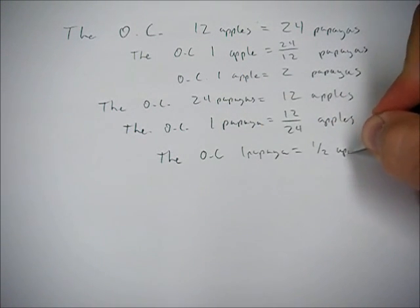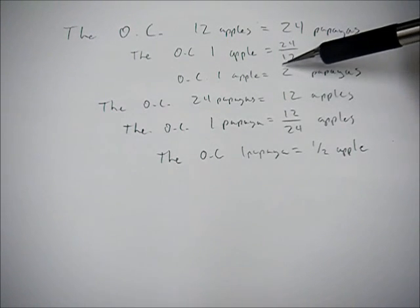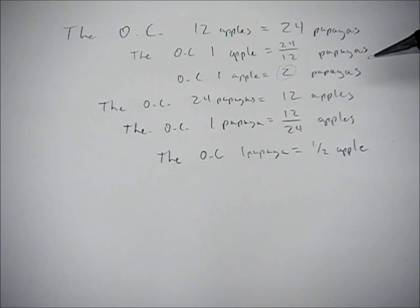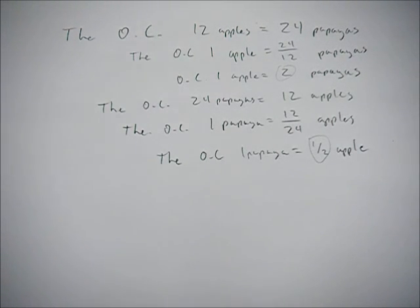And again, you can see that they're just the inverse of each other. Here the opportunity cost is two, here the opportunity cost is a half. So that's good, we've been able to figure out the opportunity cost. In the next video we'll decide who has the comparative advantage and solve for trade and the gains from trade.